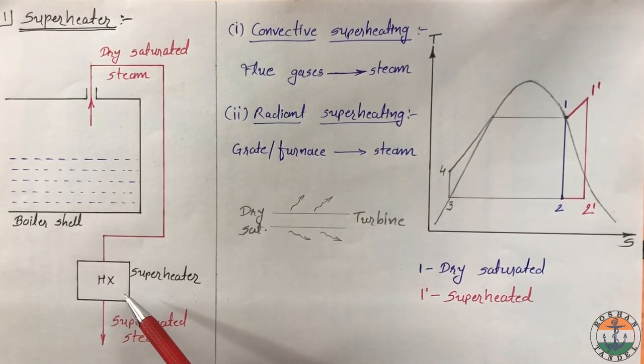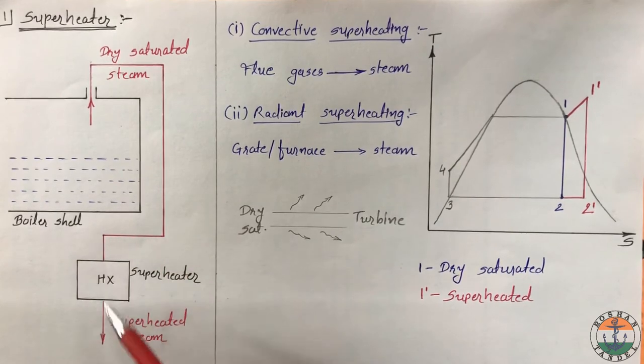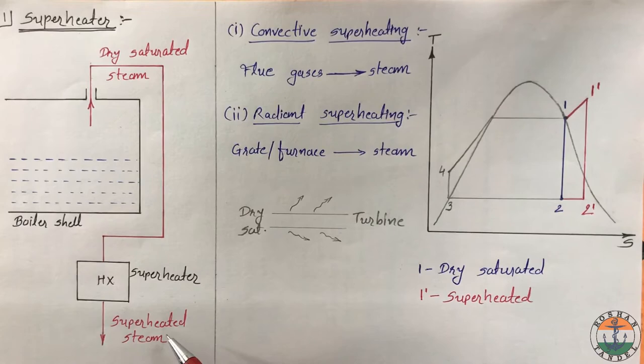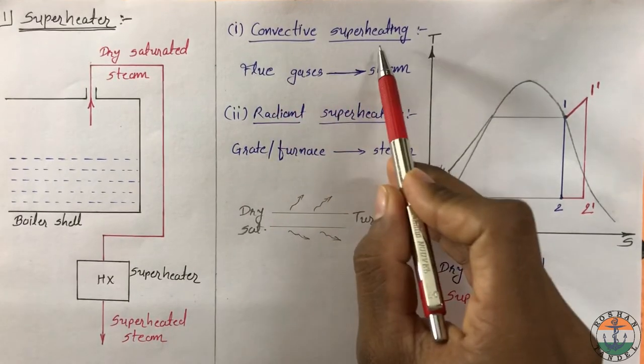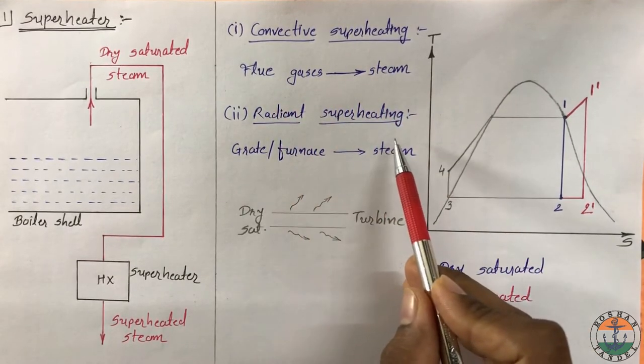Basically, it is a heat exchanger in which saturated steam is converted into superheated steam. There are two methods of superheating: convective superheating and radiant superheating.